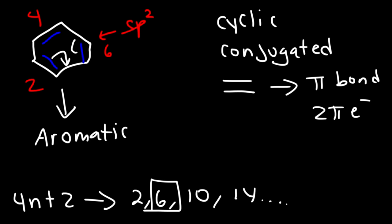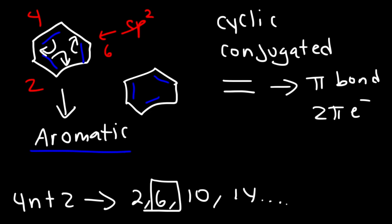All of the pi electrons are free to move in a ring. We can draw the resonance structure of benzene — the resonance structure looks like this, just moving those double bonds. Because benzene is aromatic, it is very, very stable.